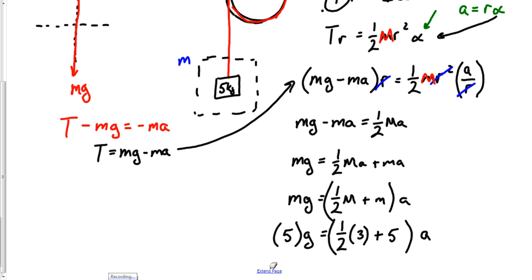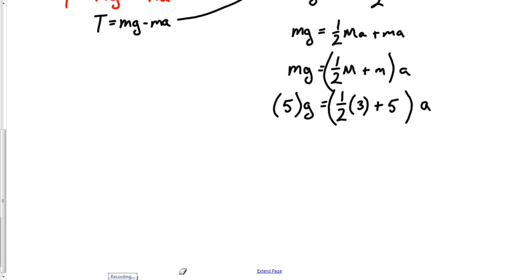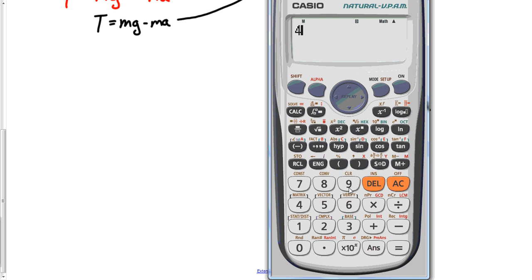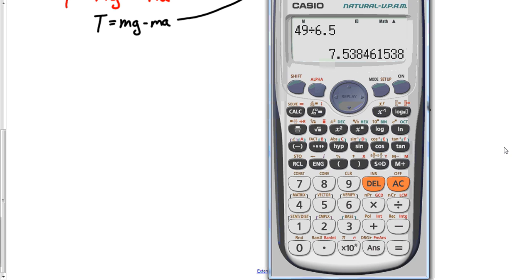Factor out your A, and then I'm going to plug in numbers after that. One half M plus little M, plug in your A. Let's plug in numbers into this, and so we've got five, the little M times G equals one half of three plus five, all times A. Half of three is one and a half plus six is 6.5. So that's six and a half A equal to five times G is actually 49. 49 divided by 6.5, 7.5.